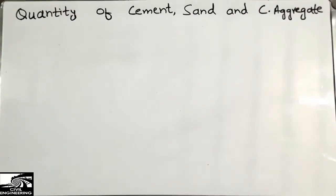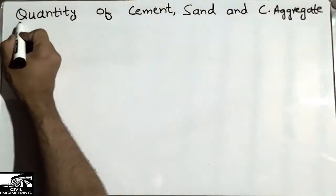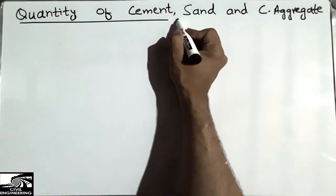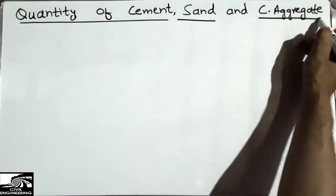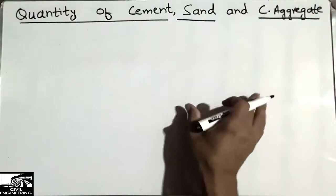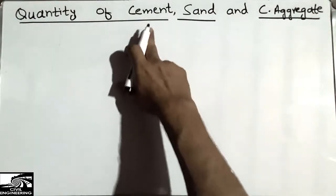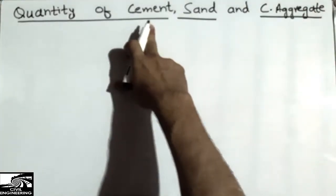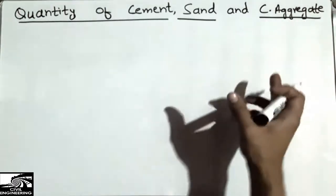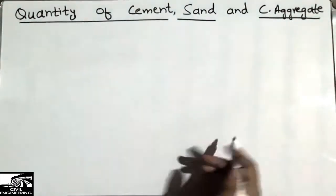Hello guys, welcome to the Seven Engineering YouTube channel. Please subscribe for more Seven Engineering updates. Today we are going to discuss how to find the quantity of cement, sand, and coarse aggregate. We will take an example of a frame structure and find how much of each material has been used.